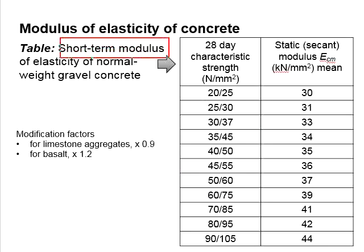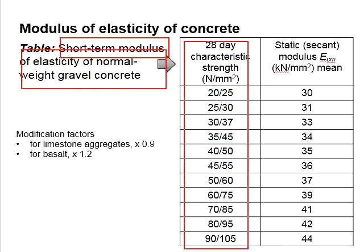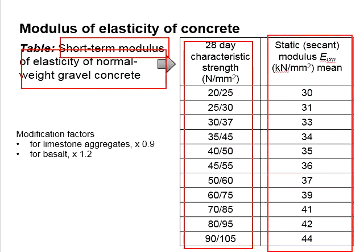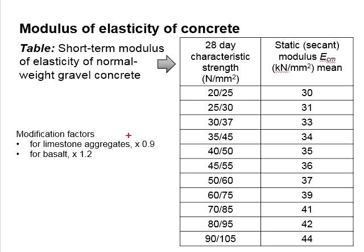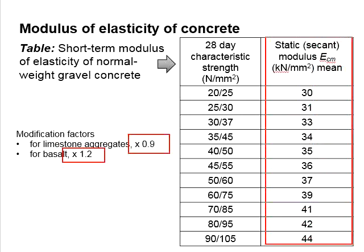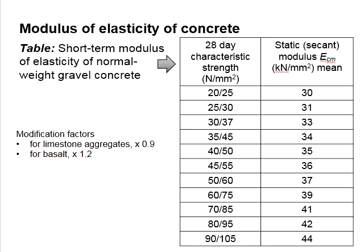The short-term modulus of elasticity for normal concrete based on different grades is given here. Some modifications can be made when aggregate types such as limestone and basalt are used — modification factors of 0.9 and 1.2 respectively can be applied to the secant modulus Ecm under these circumstances.